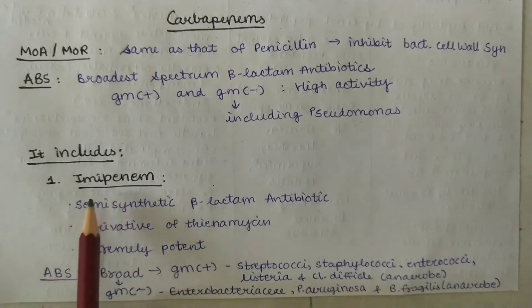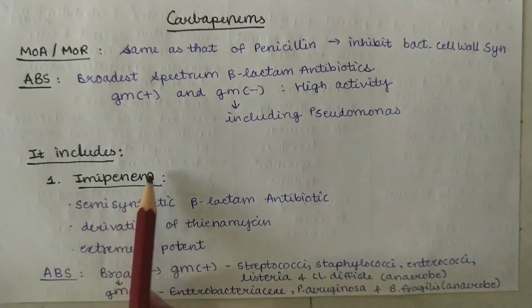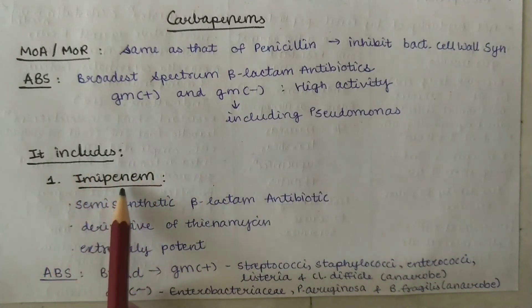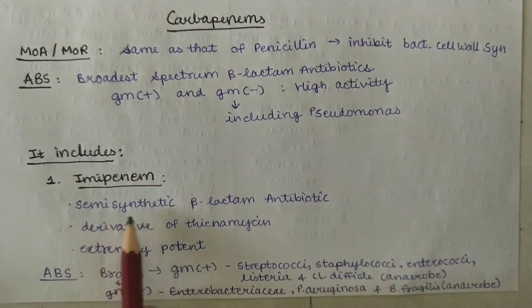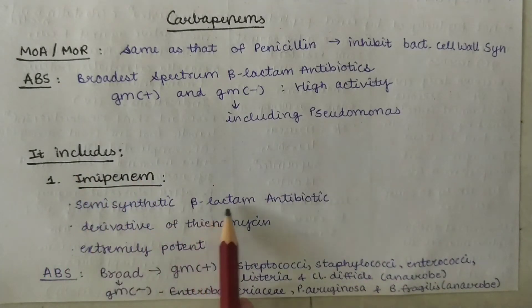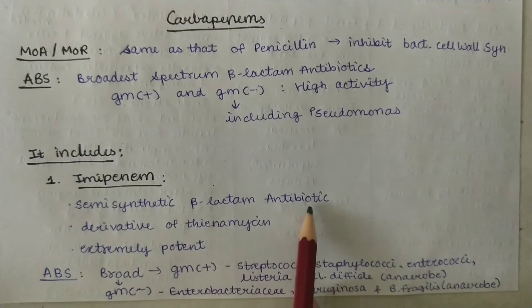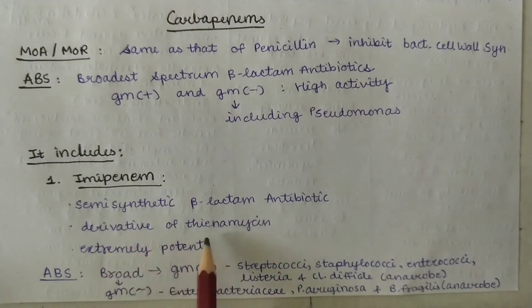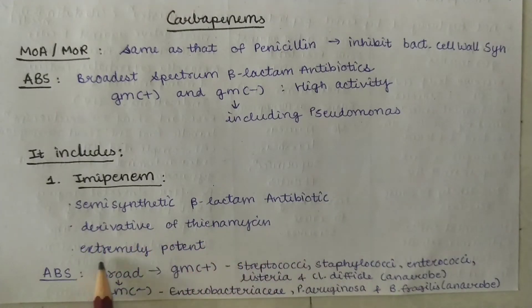First, the drug Imipenem. It is a semi-synthetic beta-lactam antibiotic and a derivative of thienamycin. It is extremely potent.